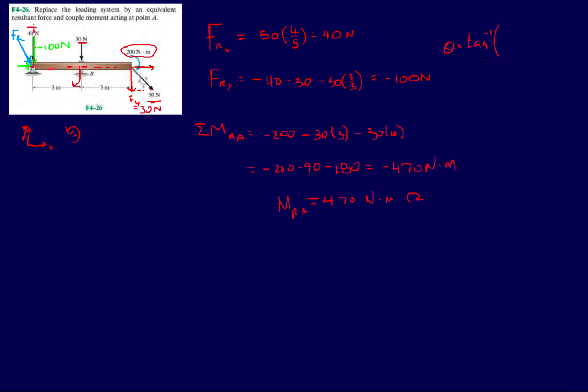Whenever they ask you magnitude and direction you have to do both. So we found the components here, actually we need to do the magnitude as well. So FR is going to be 40 squared plus 100 squared, and then here I'm going to have minus 100 over 40. Let's see what this equals. Inverse tan of minus 100 divided by 40, I get minus 68.